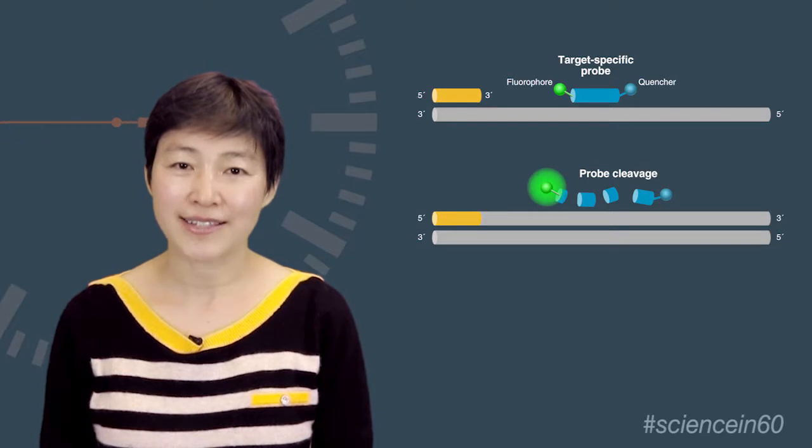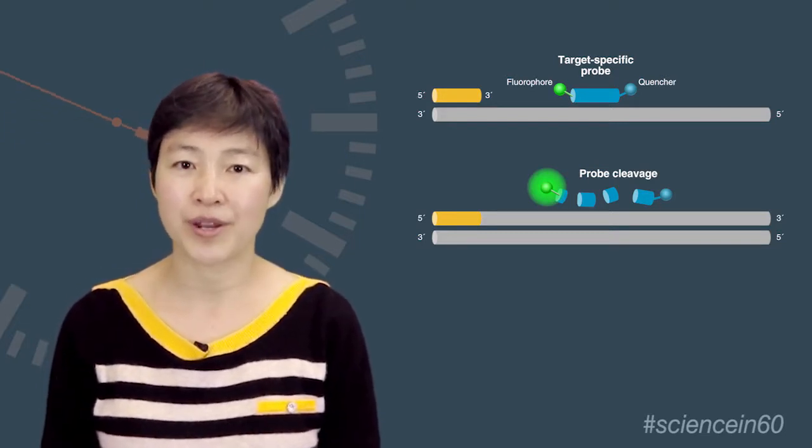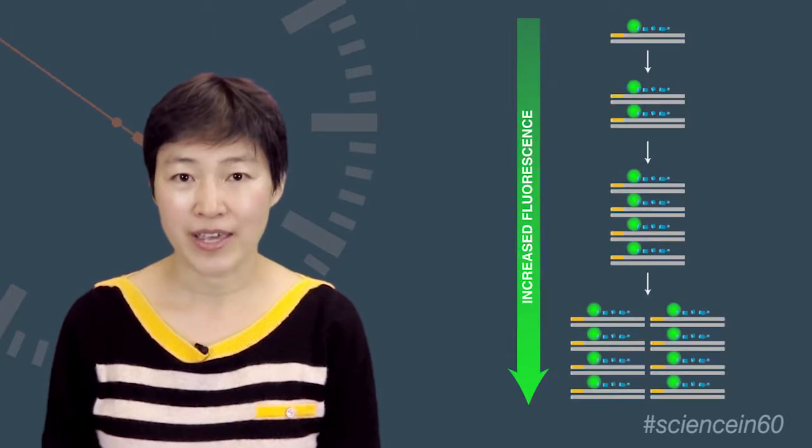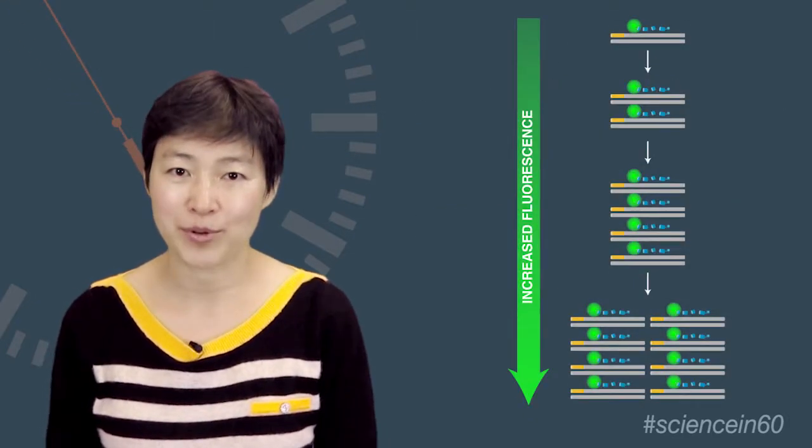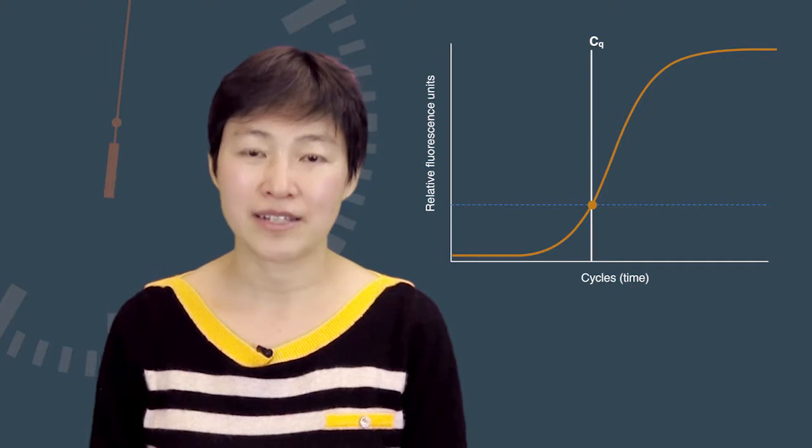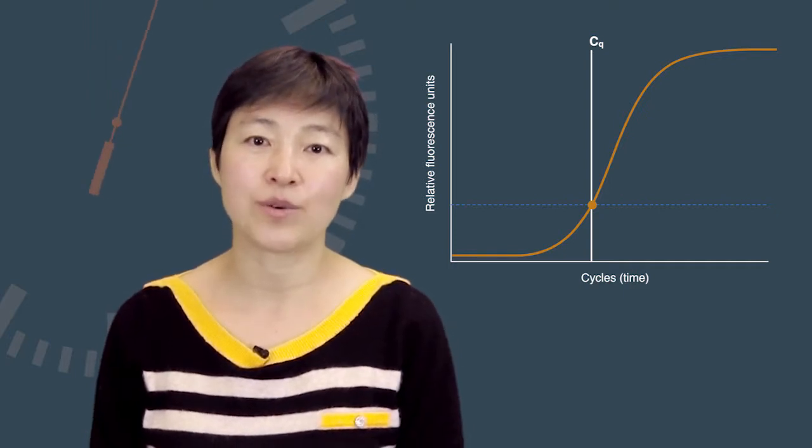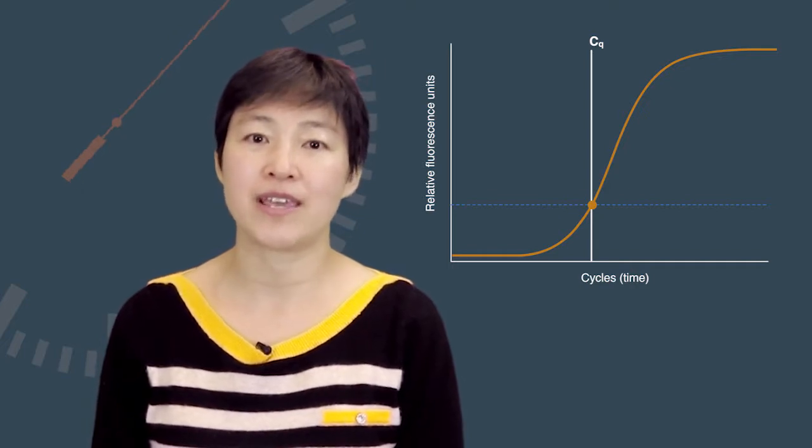In probe-based assays, fluorescence is generated by the separation of a dye-quencher pair during amplification, by cleavage of the probe, or by other means of separation. Each method relies on the detection of a fluorescent signal over background and determination of the cycle, cq, where this occurred, allowing relative or absolute quantification of the target.